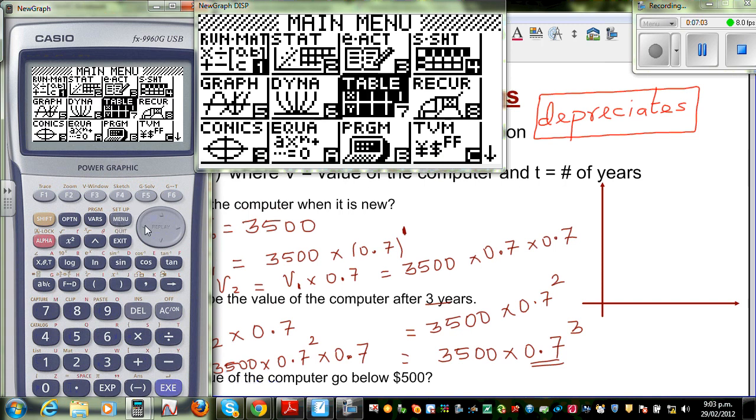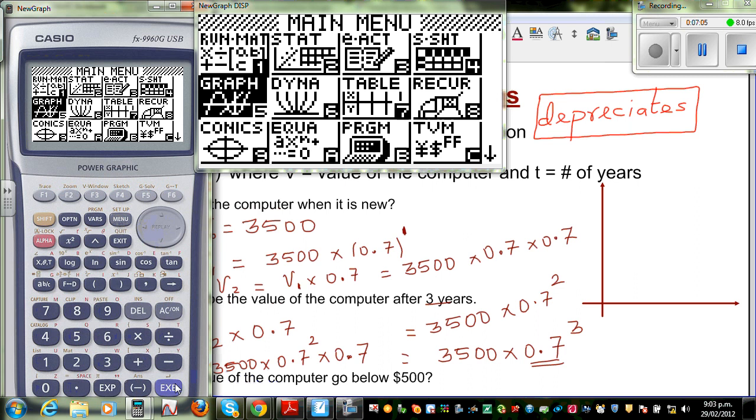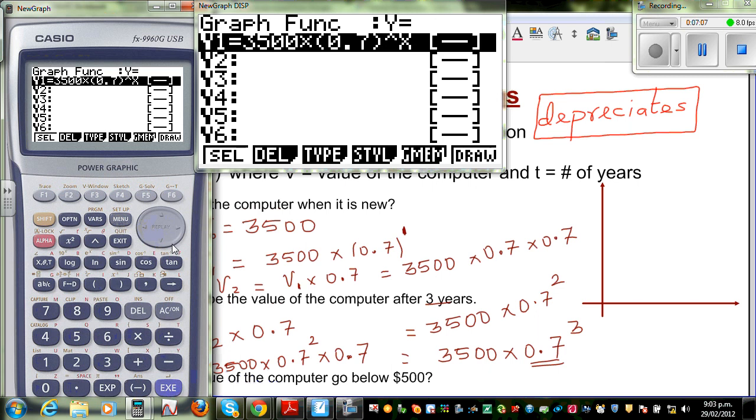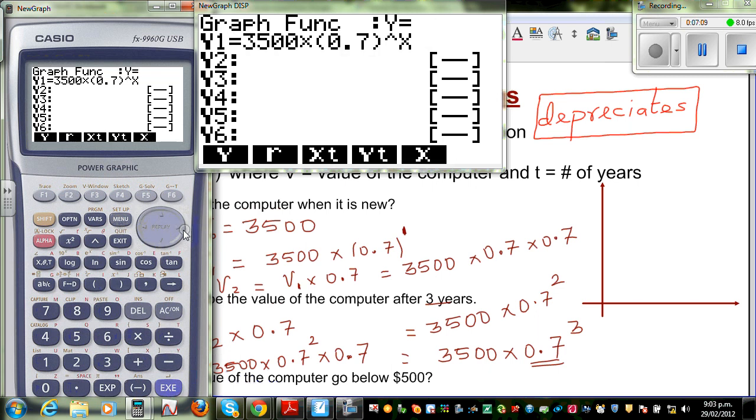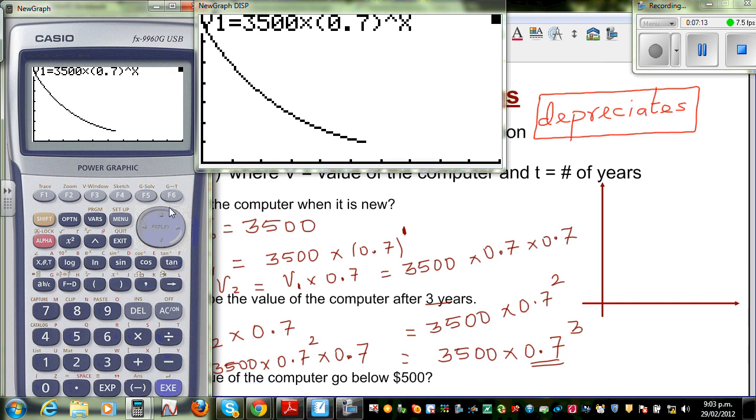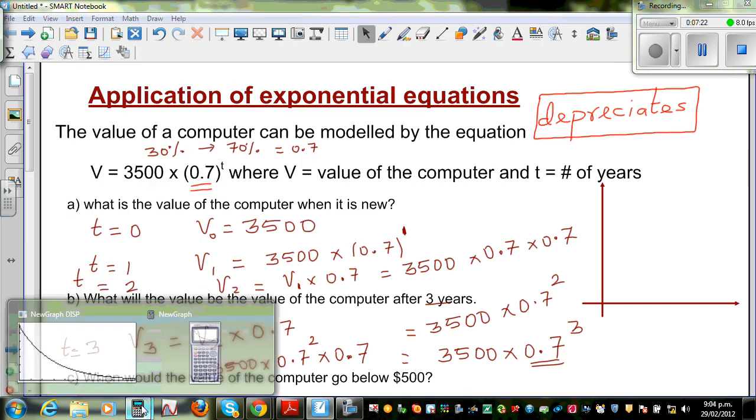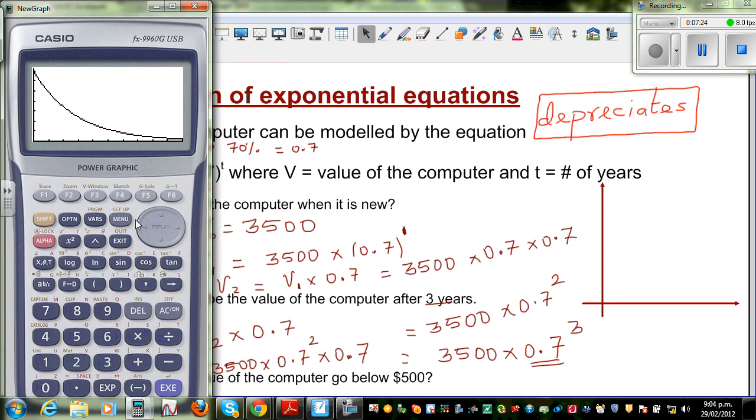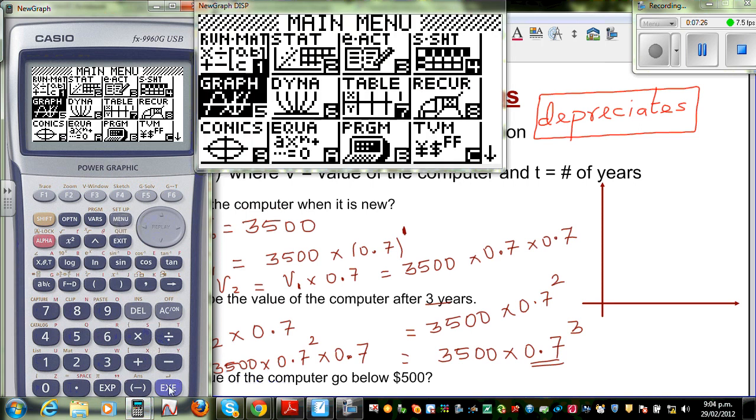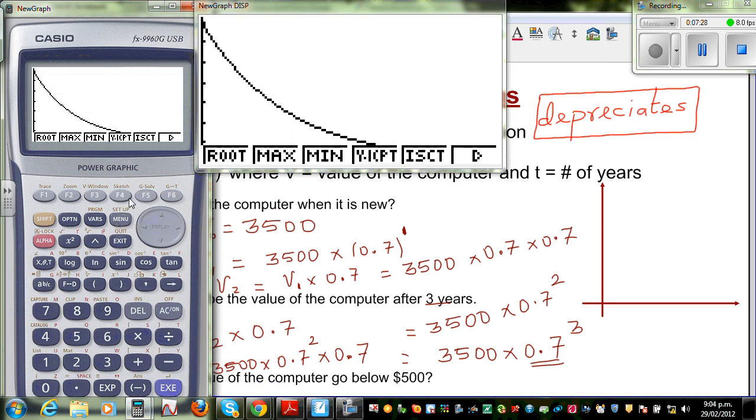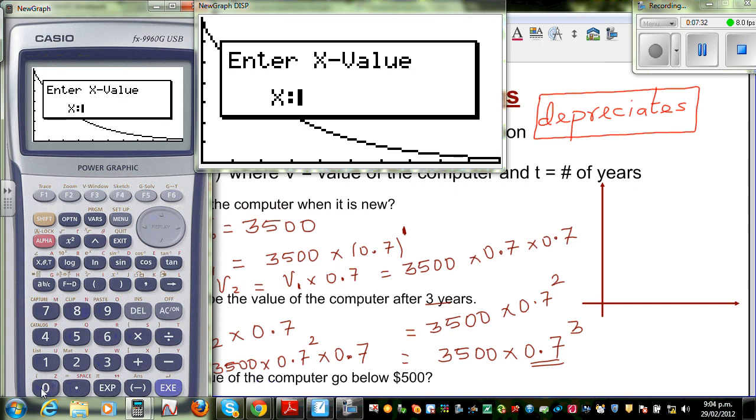Now you go to your graph menu to do these questions. So I will have to scroll like this. And then go and draw graph. So this is your graph. So the first question was, what's the value when it is new? That means, in other words, they are asking you what's the Y value when X is equal to 0. So you go Gsol and type in Ycalc when X is equal to 0, which is 3,500.